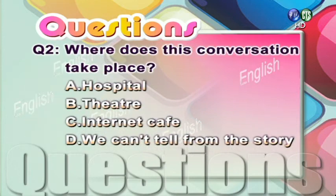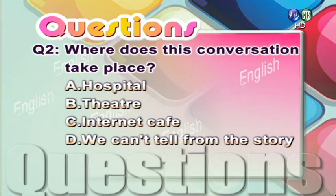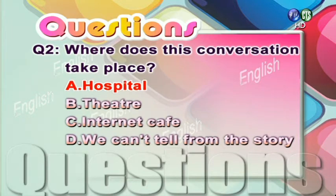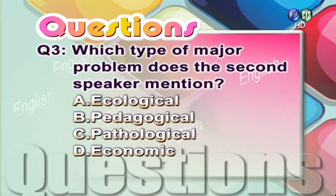Question 2: Where does this conversation take place? A. Hospital. B. Theater. C. Internet cafe. D. We can tell from the story. 答案是 A — Hospital.